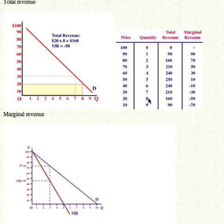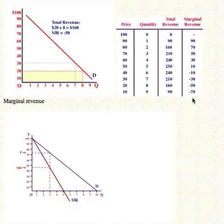When the price is $20, eight units are sold for a total revenue of $160. But the total revenue went down from $210 to $160. That's a negative $50 marginal revenue. And why? Because of givebacks.